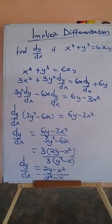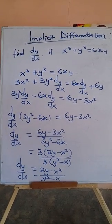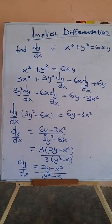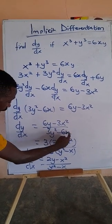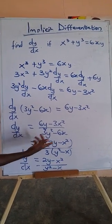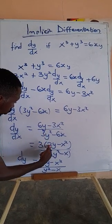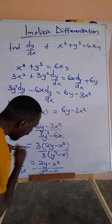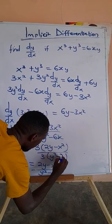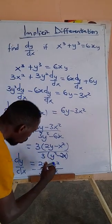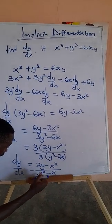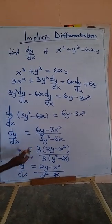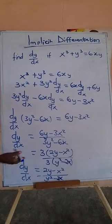I realize there is a problem in factoring our expression. The denominator is 3y squared minus 6x. When we factor out 3, we get y squared minus 2x. The numerator gives 2y minus x squared. So the correct answer is dy/dx equals (2y minus x squared) all over (y squared minus 2x). I hope you get it now.